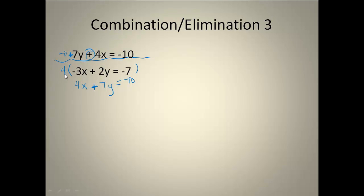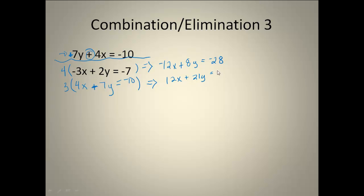So I'm going to have to multiply both equations by a number to get them to be the same number but different signs. I'm going to work with my 3 and my 4 — multiplying the top equation by 4 to get a 12, and multiplying the bottom equation by 3 to get a 12. The negative portion is already taken care of because I have a negative 3 here and a positive 4 here. So distributing that 4 to everything gives me negative 12x plus 8y equals negative 28. Distributing that 3 across the bottom gives me 12x plus 21y equals negative 30. Now I have the same number but opposite signs, so I can add my equations, giving me 0x — there's the eliminated part.